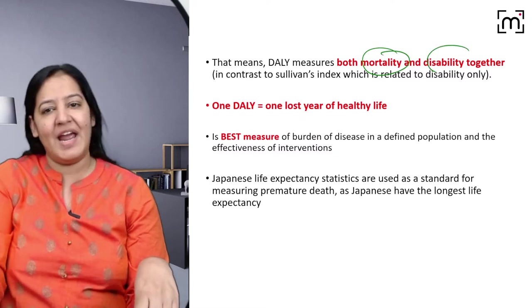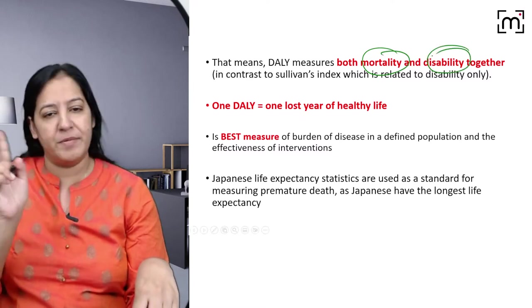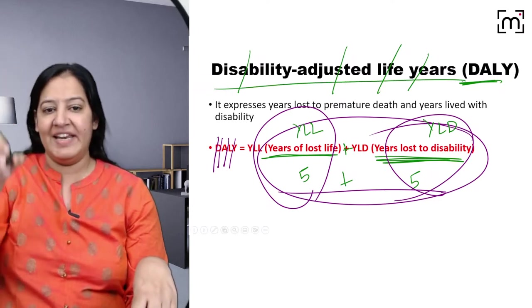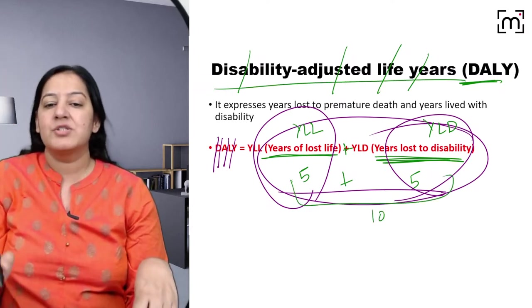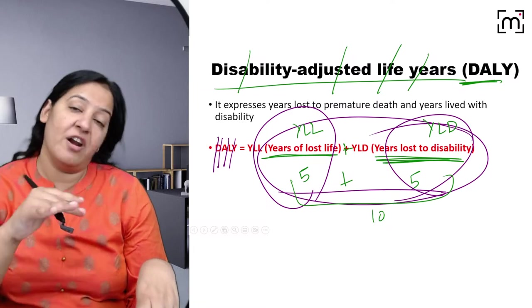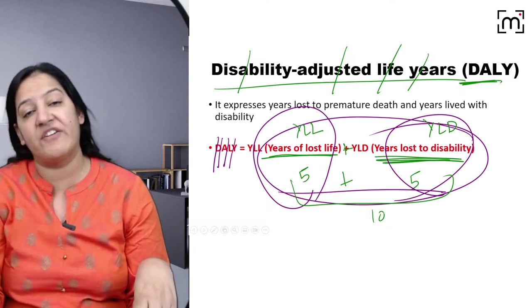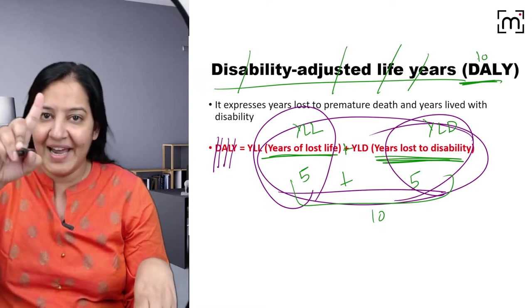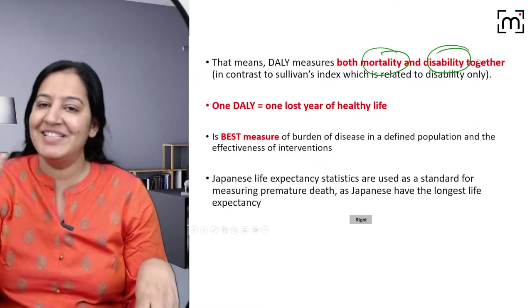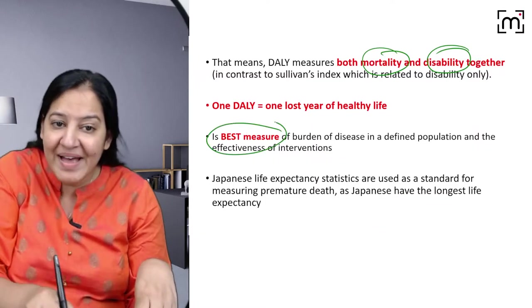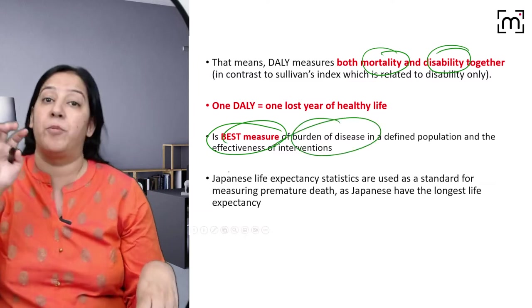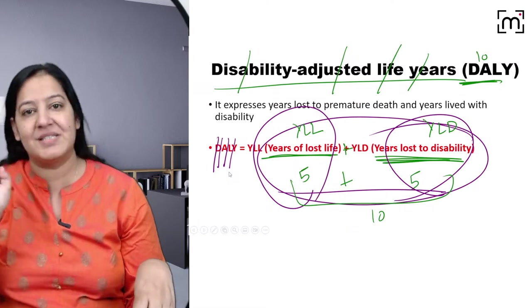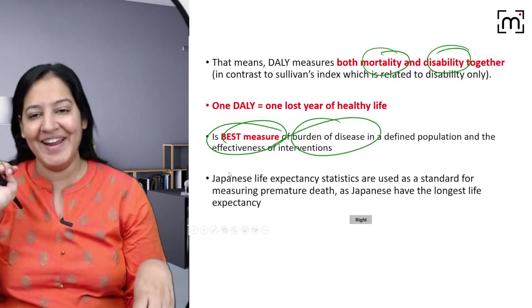One DALY equals one year. So 10 DALY equals 10 years. In the example, five years are lost in disease and five are lost in premature death, giving a total DALY of 10. DALY is the best indicator of burden of disease in a population — that is an important MCQ point.